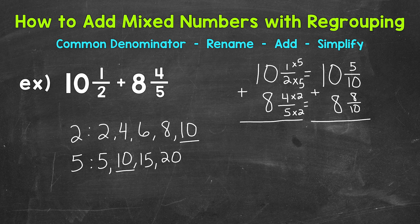So let's add the fractional parts of these mixed numbers. So 5 tenths plus 8 tenths. 5 plus 8, that gives us 13. And we have a denominator of 10. Now we can add our whole numbers. So 10 plus 8, that gives us 18. So our answer is 18 and 13 tenths.